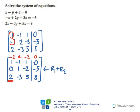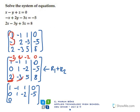If we do the addition: minus two plus two is zero; two minus three is minus one; and minus two plus five is three; and zero plus eight is eight. What we do here is minus two times row one plus row three.